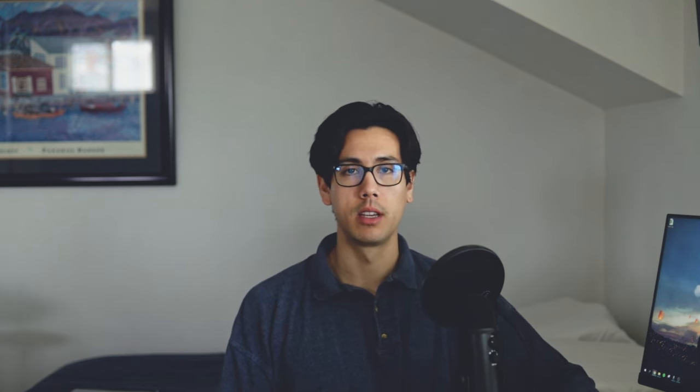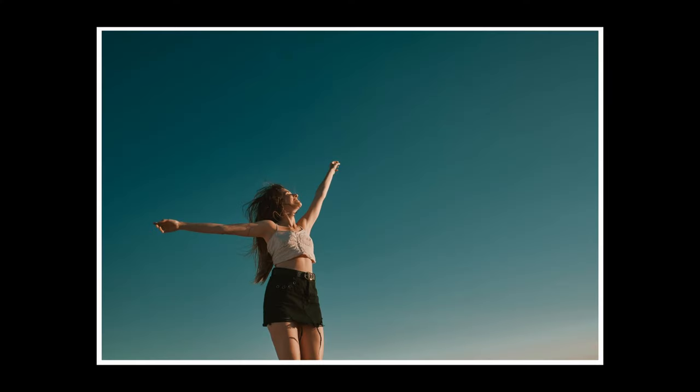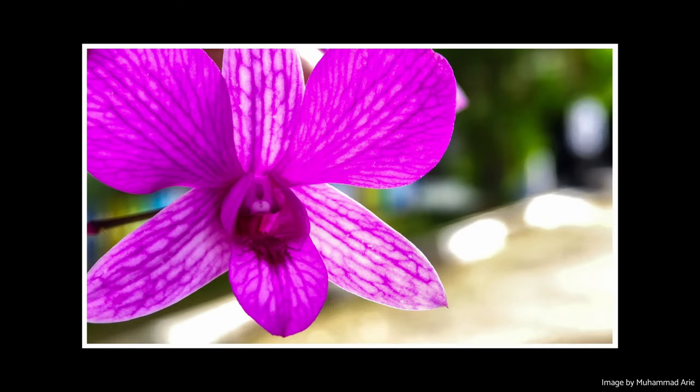The next tip is to use negative space. Negative space is another great technique to add emphasis to your subject. Negative space refers to the area around your subject that is intentionally left empty. By leaving that space, there is a sense of isolation and minimalism added to the image that will draw the viewer's attention to the subject and point of emphasis. Using negative space is especially effective when photographing simple, minimalist subjects such as lone trees, one to two people, or a single flower. By leaving a large area of negative space, you can create a sense of solitude and contemplation that will enhance the impact of your subject.